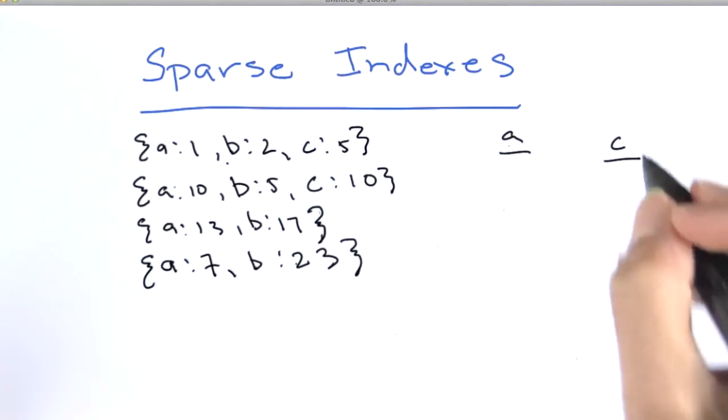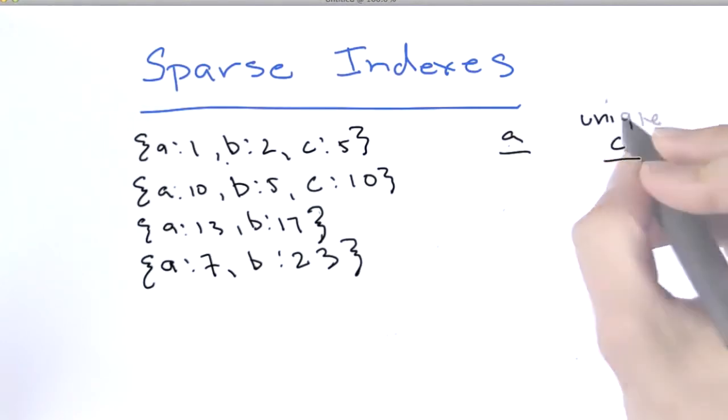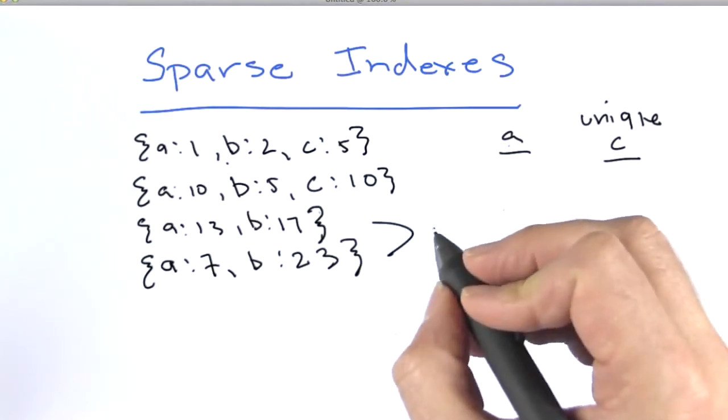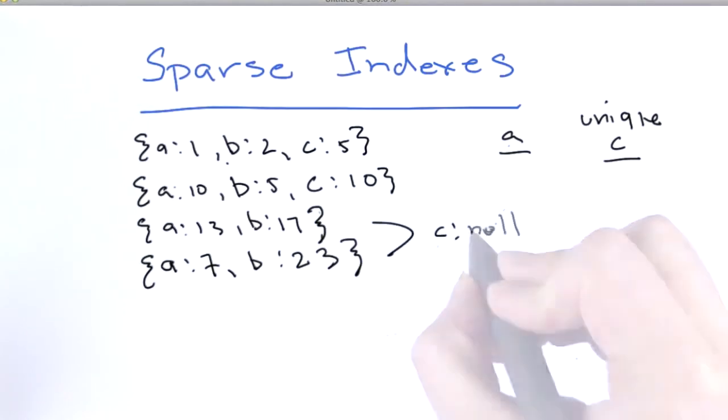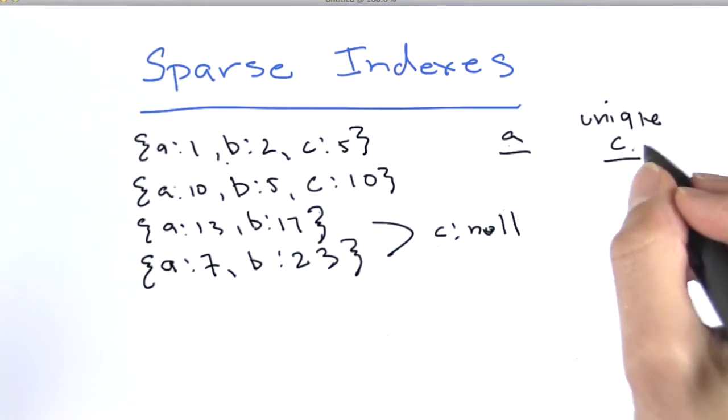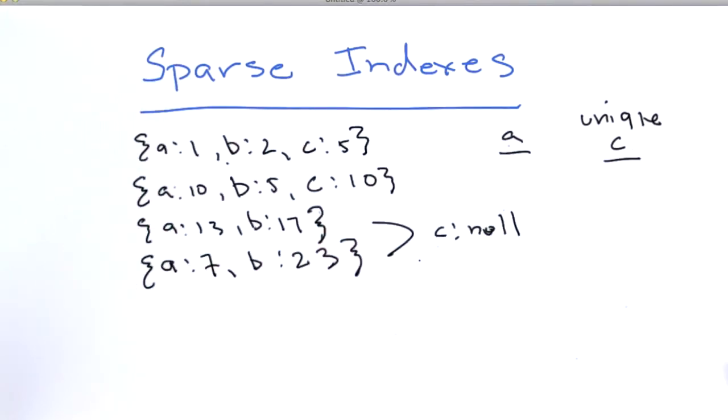The reason why you won't be able to create a unique index on C is that these two documents are both considered to have a C value of null. Since a unique index only allows a value to appear once in the index, you would get a duplicate key entry if you tried to create a unique index on C for these four documents.